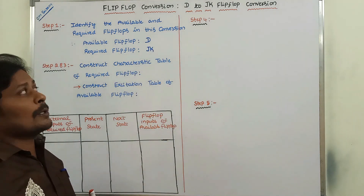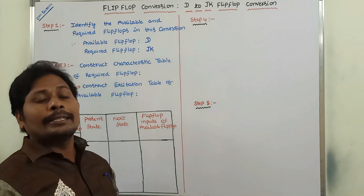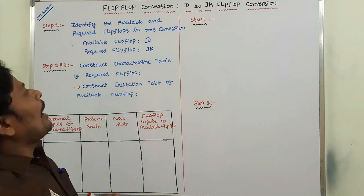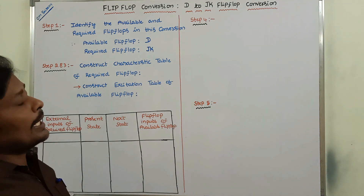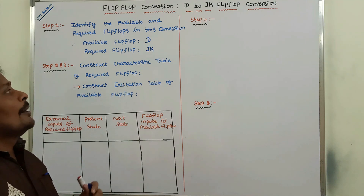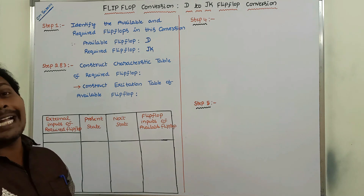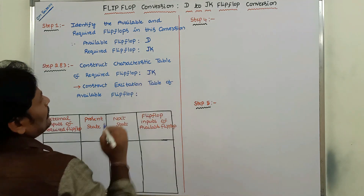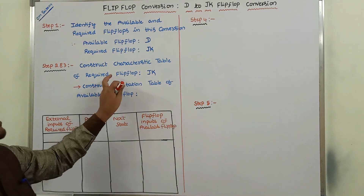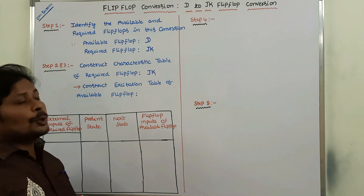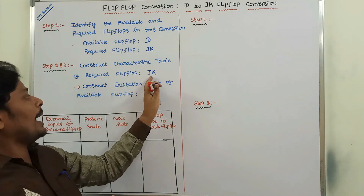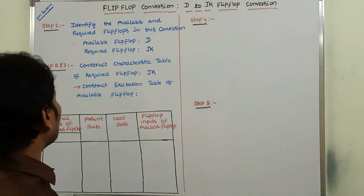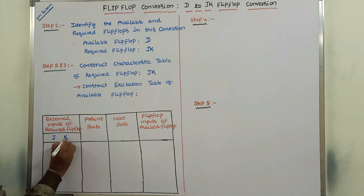Here D flip-flop is called as source flip-flop. The second step is to construct the characteristic table of the required flip-flop. Here the required flip-flop is JK flip-flop. Now we have to construct the characteristic table for the required flip-flop. In that required flip-flop, two inputs are there: J is one input and K is another input. So here J and K can be called as external inputs of the required flip-flop.